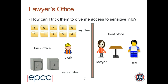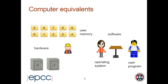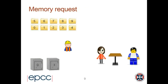I'm represented as a naive simpleton. The lawyer is the person I speak to who makes the decisions. In the back office are my files, secret files in safes I'm not supposed to see, and a legal clerk who does the donkey work. The computer equivalents: I'm a user program, the lawyer is the OS/CPU, my documents are user memory, the safes are OS kernel memory, and the legal clerk is the memory system.